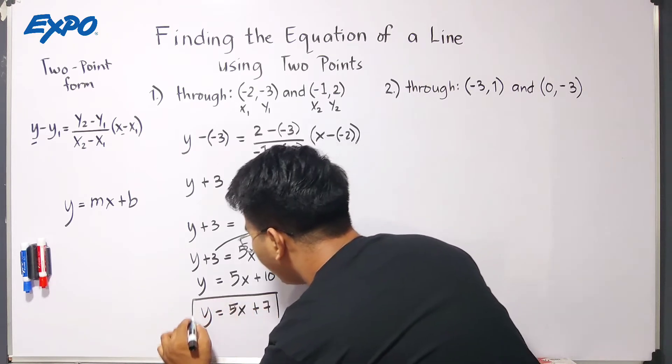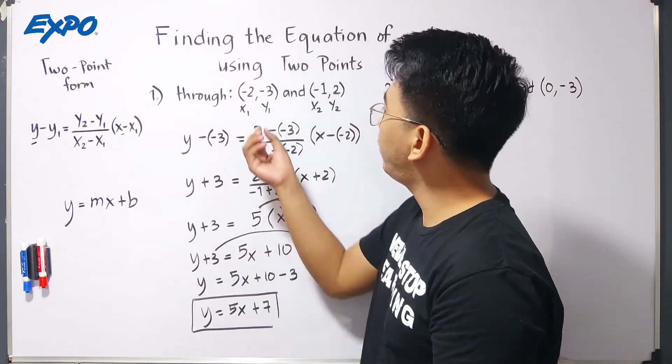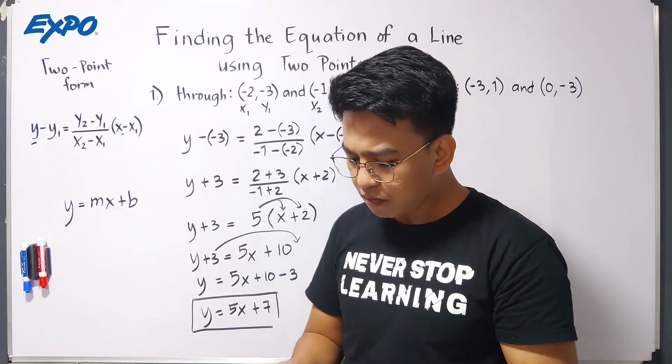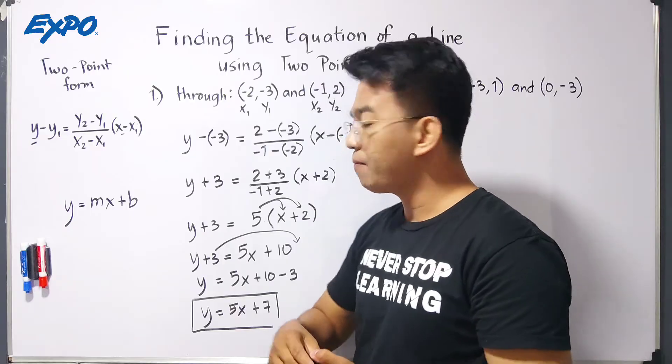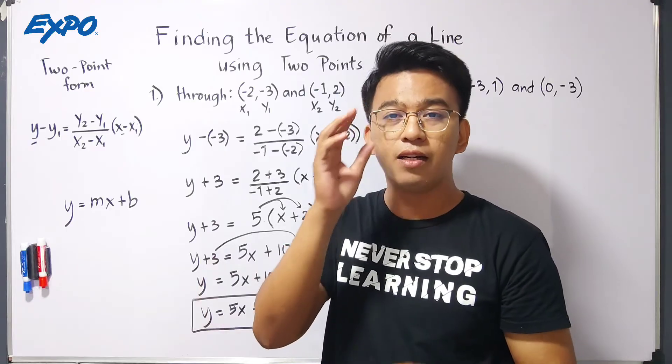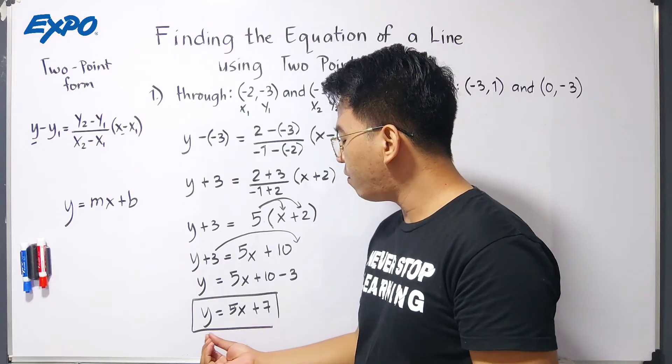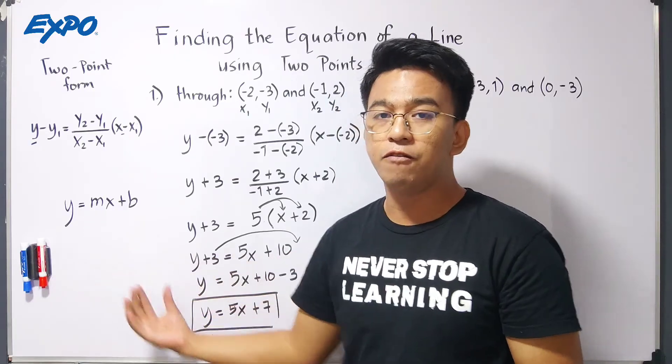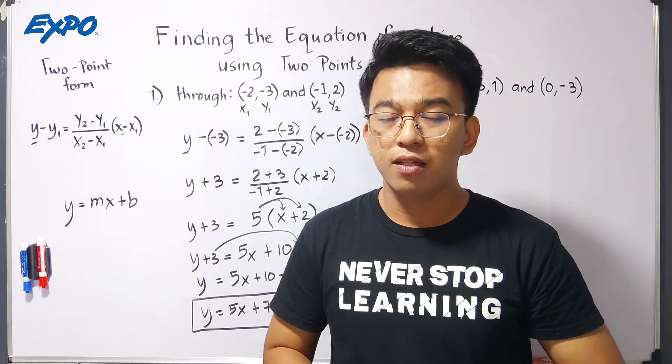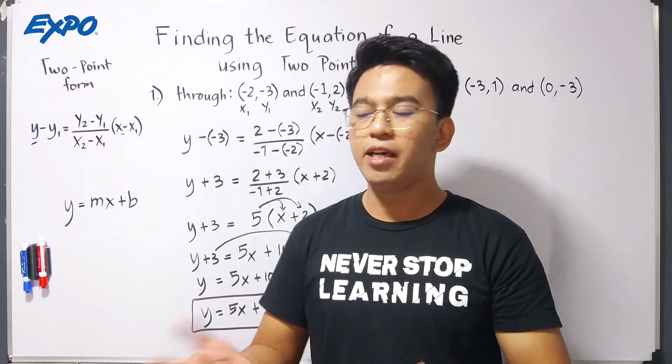And this is now the slope-intercept form of the equation obtained when we use these two points to find the equation of a linear equation. Now, guys, why is it better to do this, to write our equation in this form, instead of the standard form a x plus b y equals c. When we have y equals mx plus b form, you can easily identify the value of the slope and the y-intercept. In many exams, they're asking for the slope and the y-intercept.